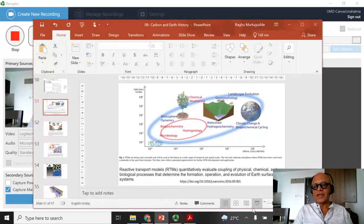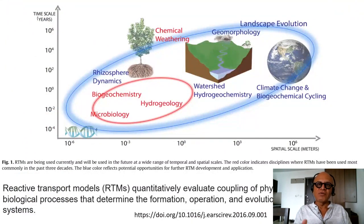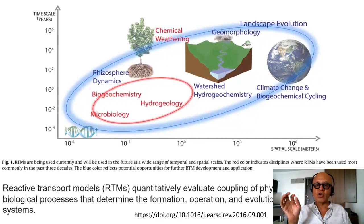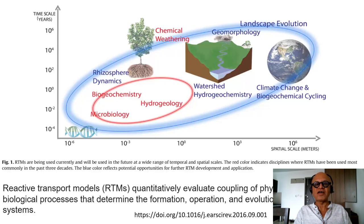Continuing with the weathering, let's look at a little bit more detail about the terrestrial weathering processes. When we do carbon cycle and mass budget, especially over longer time scales, geological, biological, chemical and climate processes get involved in the weathering rates. We already looked at estimates of modern fluxes of various geologic processes in terms of their regulation of CO2.